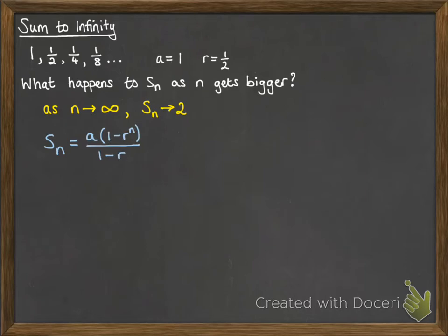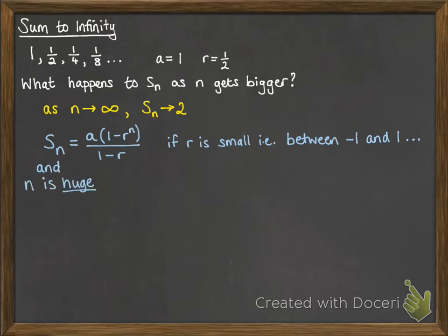Thinking about our formula for the sum of the first n terms — what happens if r is small, so between minus 1 and 1, i.e. a proper fraction, not a top-heavy one, and n is also very, very big — we'll actually call it infinity. Thinking about our r to the n part in that formula: if r is a fraction, something between minus 1 and 1 or a decimal, and you put that to the power of something very, very big, it's going to make r to the n become incredibly tiny. Going up to infinity, it becomes so tiny that we can actually say that it's 0.